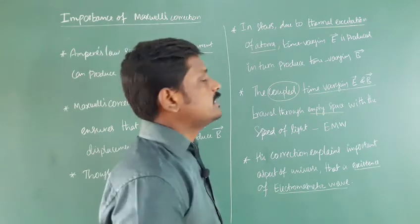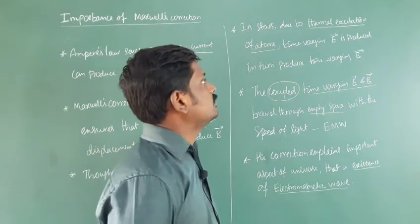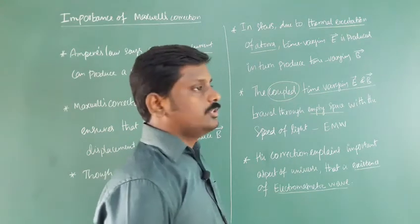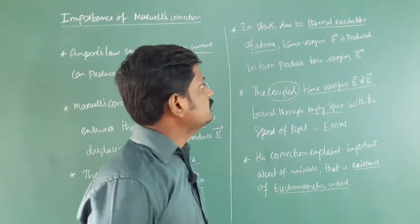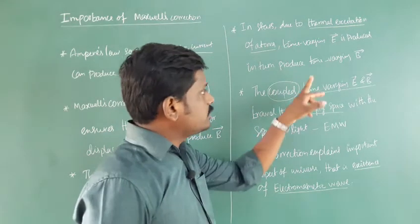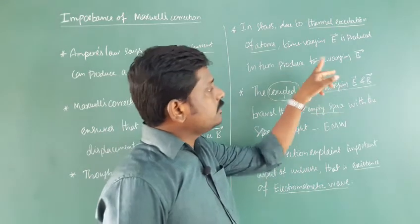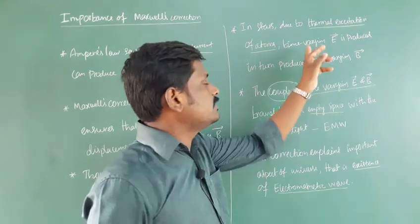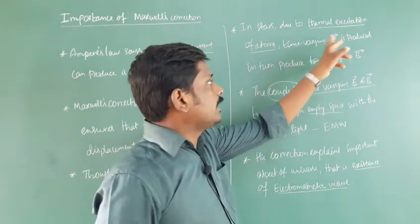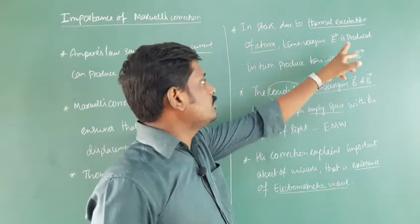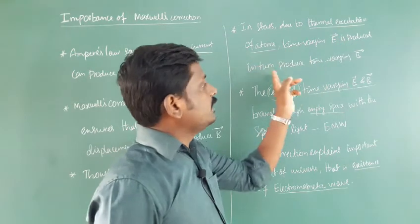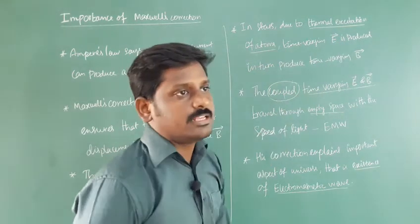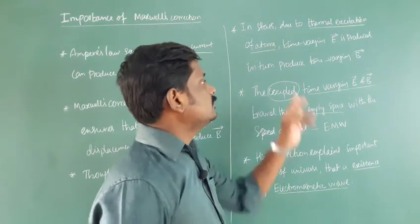In stars, due to the thermal excitation of atoms, a time-varying electric field is produced. In turn, it produces a time-varying magnetic field. So a change in electric field produces a time-varying magnetic field.